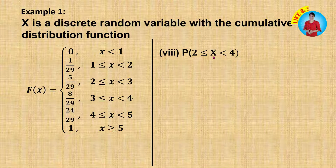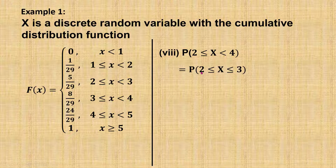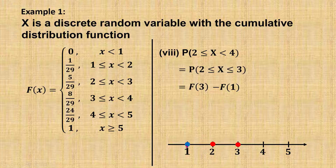Find the probability when x is greater than or equal to 2 and less than 4. Since x is a discrete random variable, x less than 4 equals x less than or equal to 3. With 2 and 3 both included, the probability equals F(3) minus F(1), keeping values 2 and 3. F(3) equals 8 over 29 and F(1) equals 1 over 29. After calculating, the answer is 7 over 29.